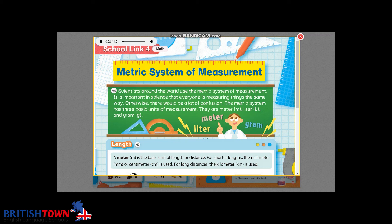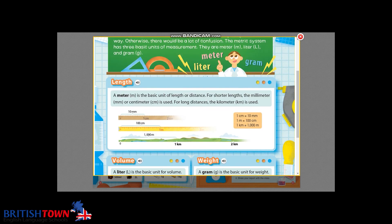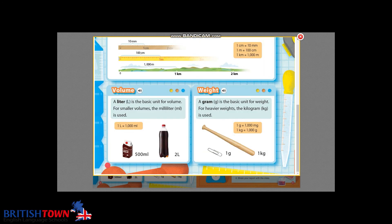Metric System of Measurement: Scientists around the world use the metric system. It's important that everyone measures things the same way, otherwise there would be confusion. The three basic units are meter, liter, and gram. A meter is the basic unit of length — millimeter or centimeter for shorter lengths, kilometer for long distances. A liter is the basic unit for volume — milliliter for smaller volumes. A gram is the basic unit for weight — kilogram for heavier weights.